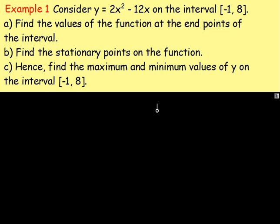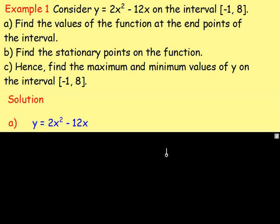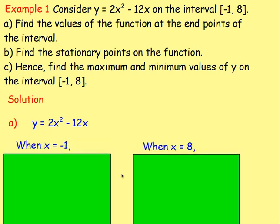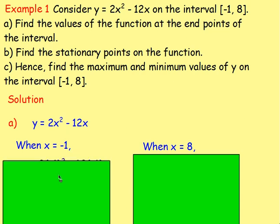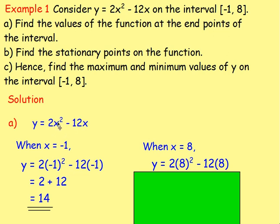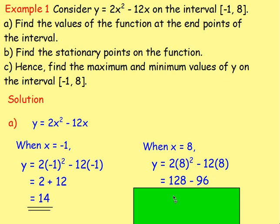Find the maximum and minimum values of y in that interval. For part a, we're given y equals 2x squared minus 12x, with end points at negative 1 and 8. When x is negative 1: y equals 2 times negative 1 squared minus 12 times negative 1, which gives 2 plus 12, which is 14. When x is 8: y equals 2 times 8 squared minus 12 times 8, giving 128 minus 96, which is 32. So the values of the function at the end points are 14 and 32.